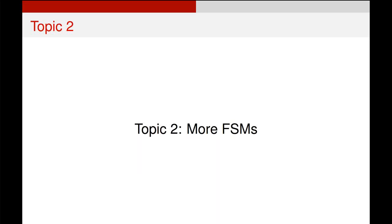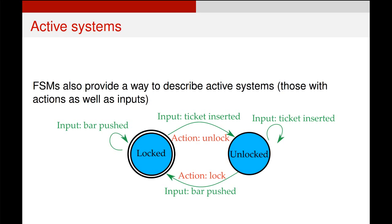Before diving into more complex finite state machines, we'll take a look at a couple more examples. Here's a slightly different way of describing a turnstile as a finite state machine. This is an active system now — as well as having two states and inputs that control the transitions, we've now got these red blocks of text. These are called actions. When our system or controller has some action associated with it, we call this an active system.